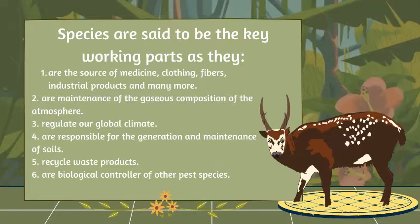In a natural and well-diverse ecosystem, species are the key working parts. They are the main source of medicine, clothing, fibers, and industrial products. They are important in maintaining the gaseous composition of the atmosphere, regulating our global climate, generating and maintaining soil, recycling waste products, and serving as biological controllers of pest species. An ecosystem surely would not function if all species were lost.